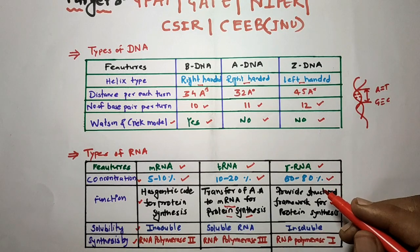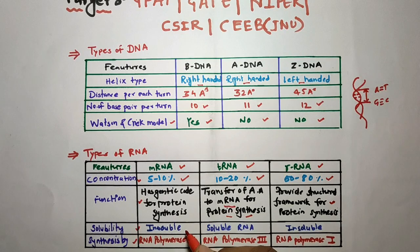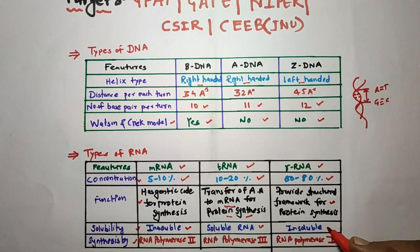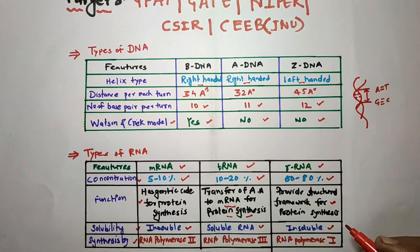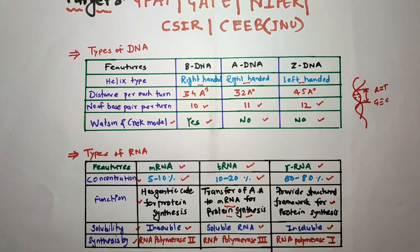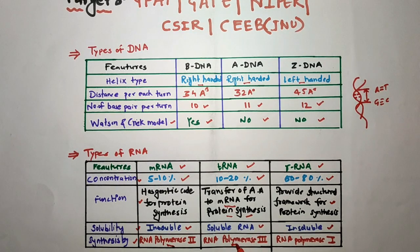Now we will see whether each RNA is soluble or insoluble. mRNA is insoluble RNA, tRNA is soluble RNA, and rRNA is insoluble RNA. Regarding where each type of RNA is synthesized: mRNA is synthesized by RNA polymerase 2, tRNA is synthesized by RNA polymerase 3, and rRNA is synthesized by RNA polymerase 1.